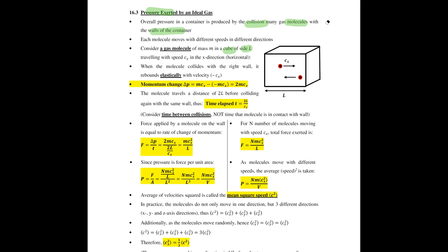The cube is of side L — length L, width L, and height L. Then consider that you have a gas molecule of mass m that is moving with speed Cx in the horizontal direction only. So you have this molecule moving towards the right with speed Cx, and it will eventually collide with the wall.